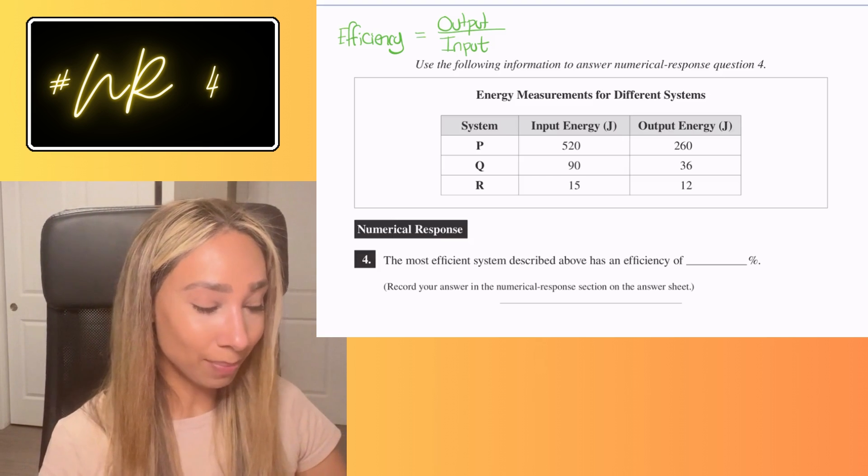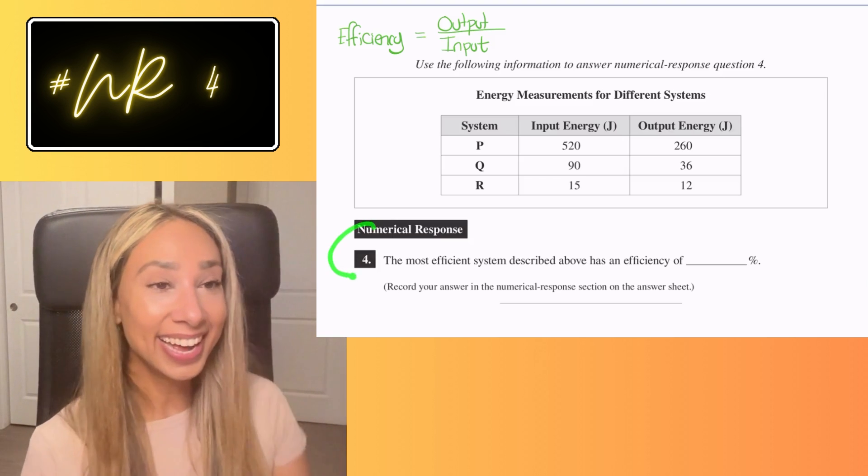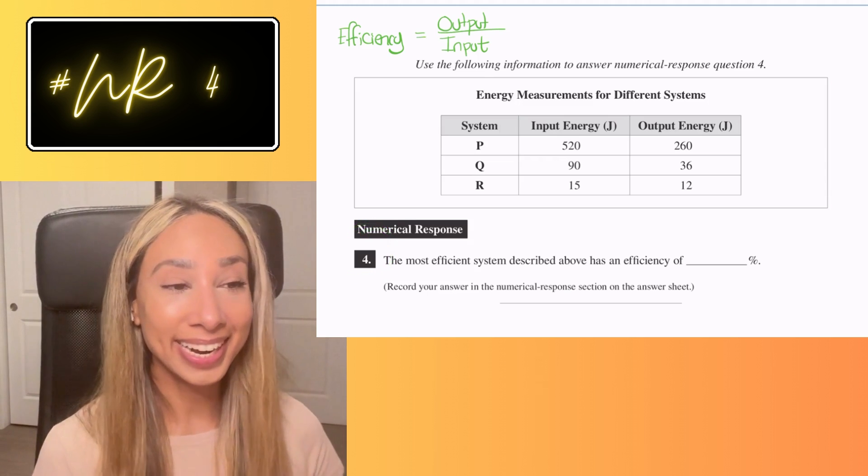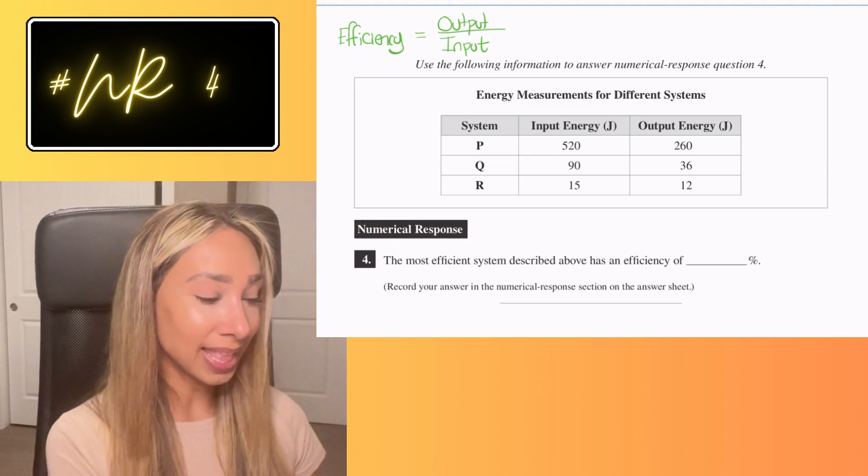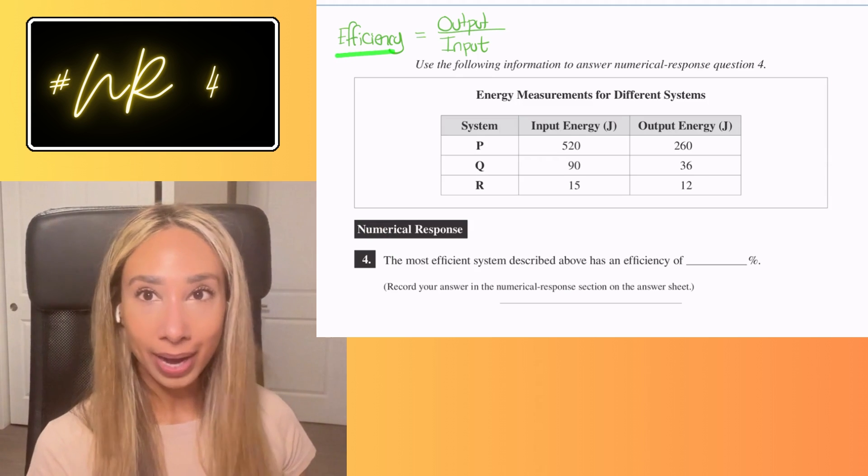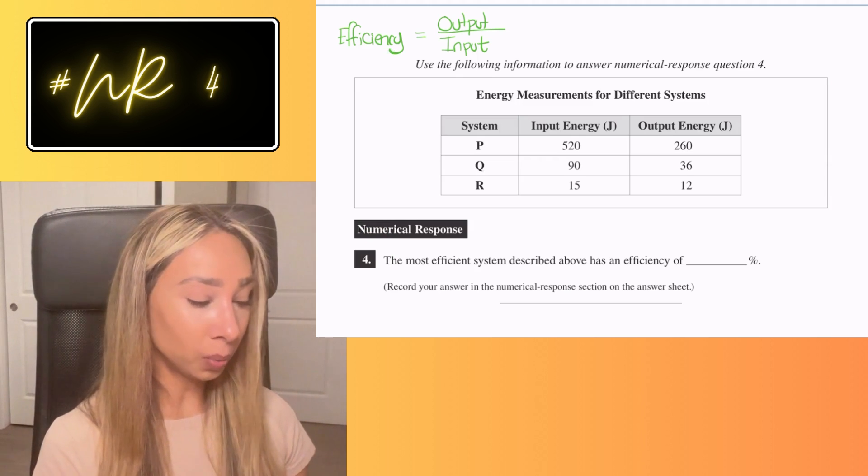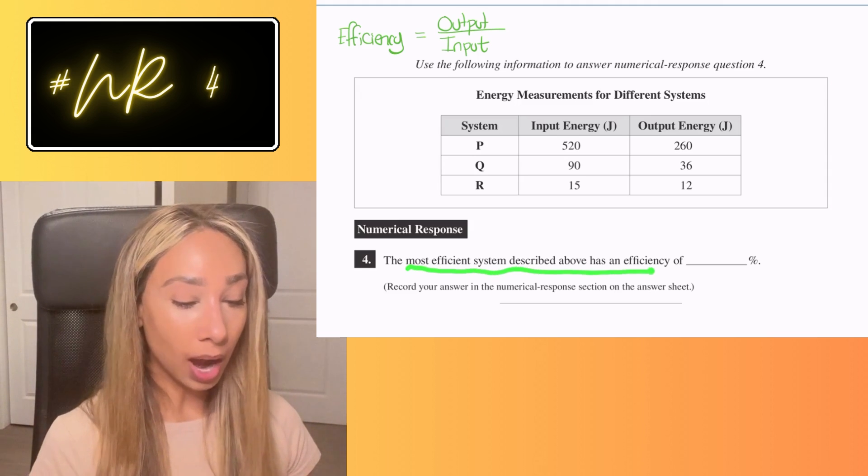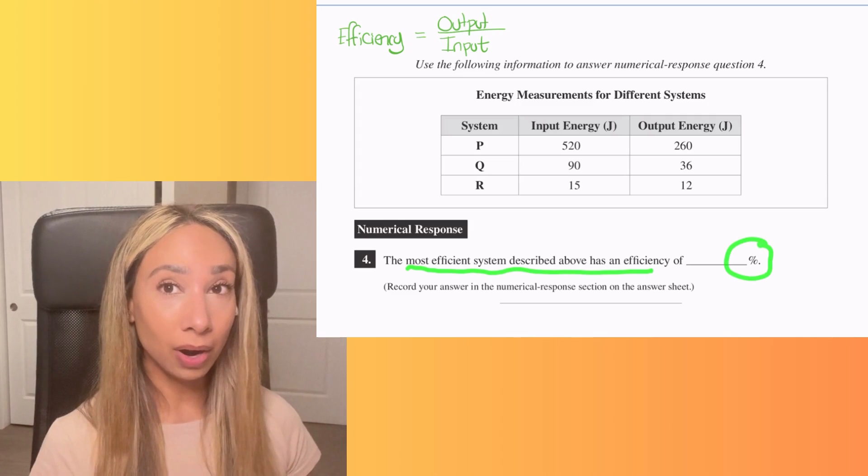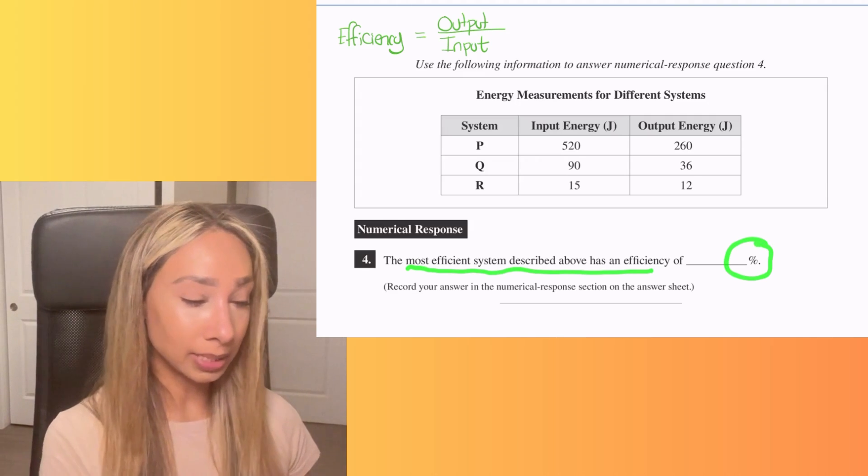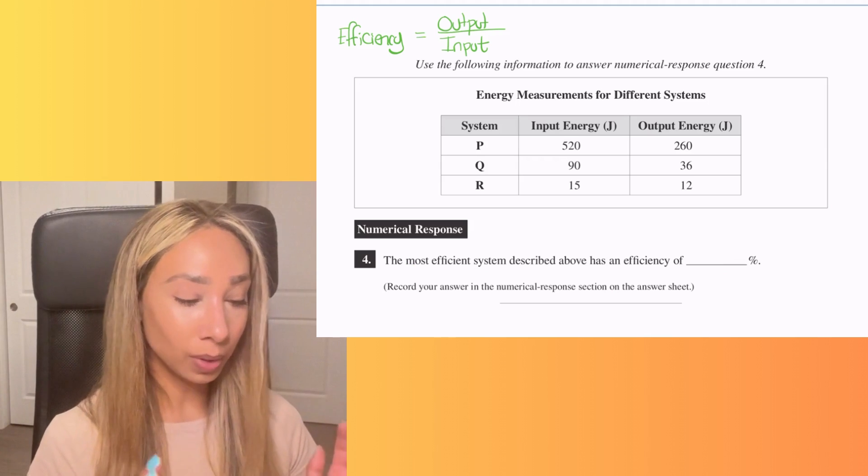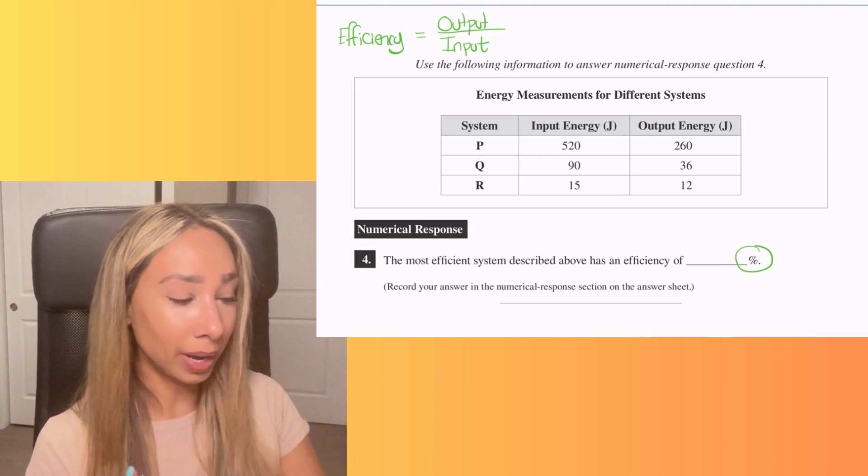Numerical response number four. So we're on this one here. What you need to recognize is there is a formula we have to know and that's efficiency. So let me back up in this question. We need to figure out which one has the most efficient system. And a key thing we need to remember here is we are going to need to express that number as a percentage. So that means whatever answer we get, we're going to need to multiply it by a hundred.